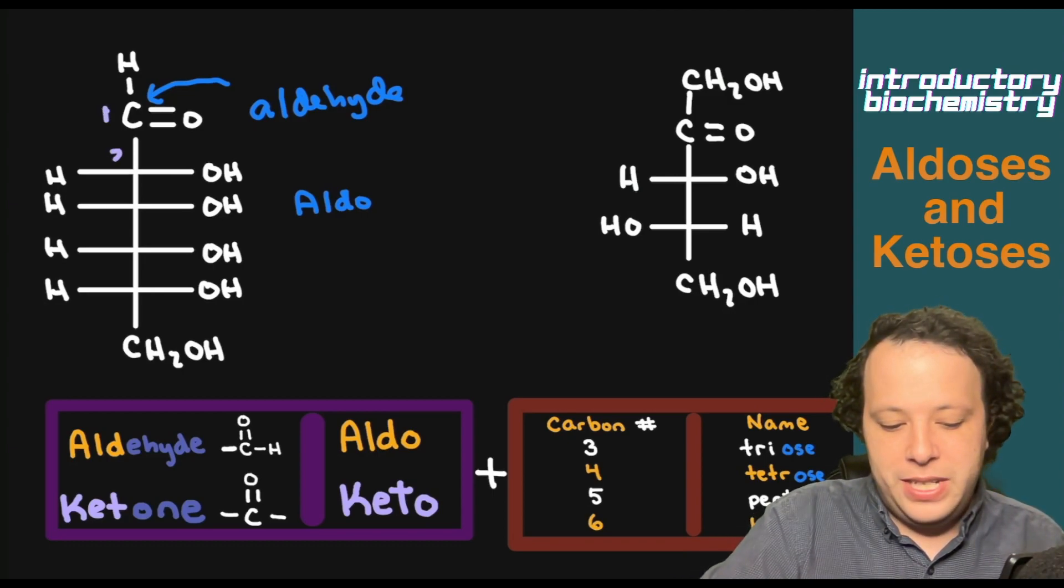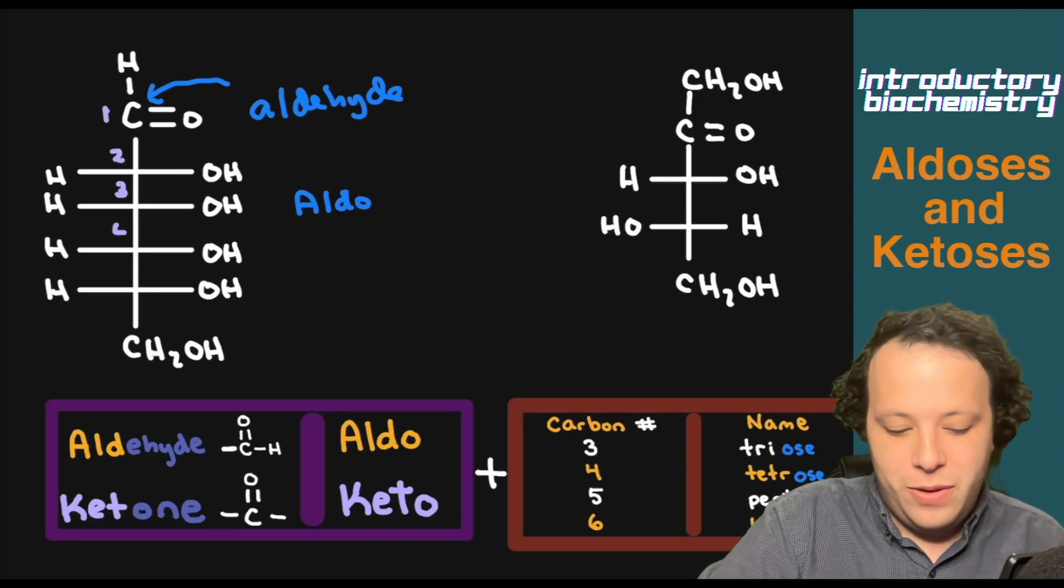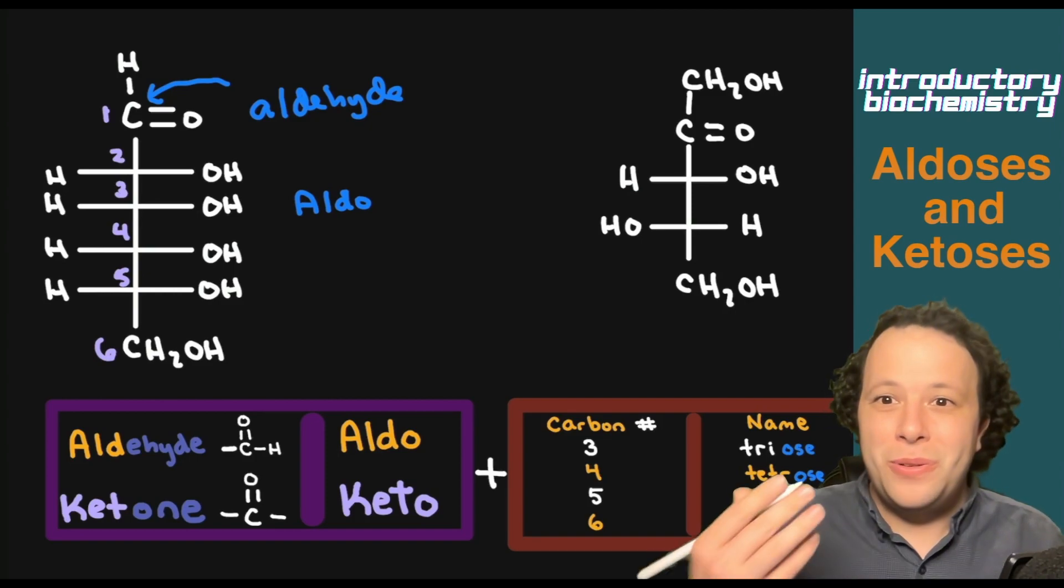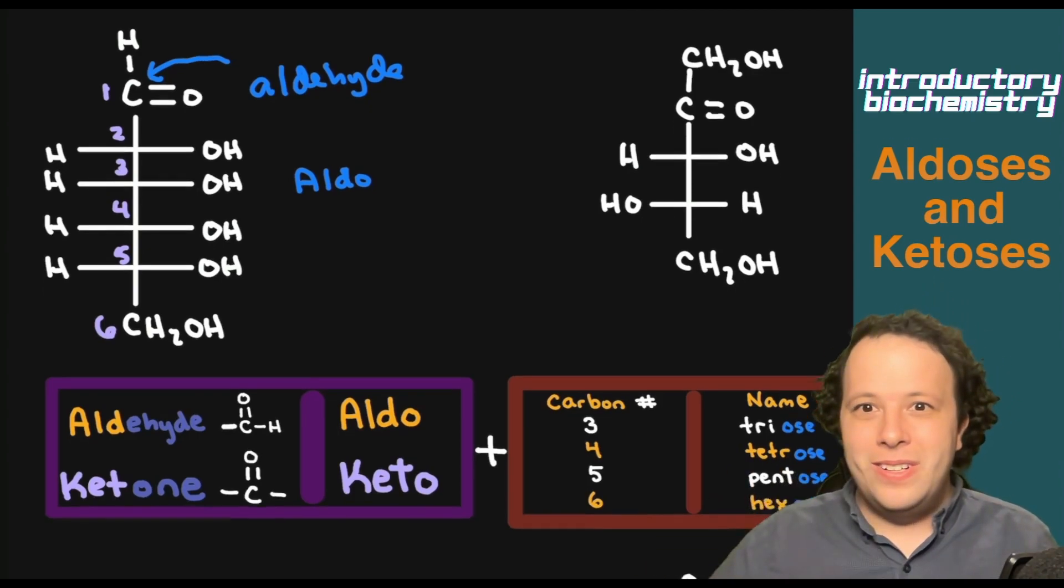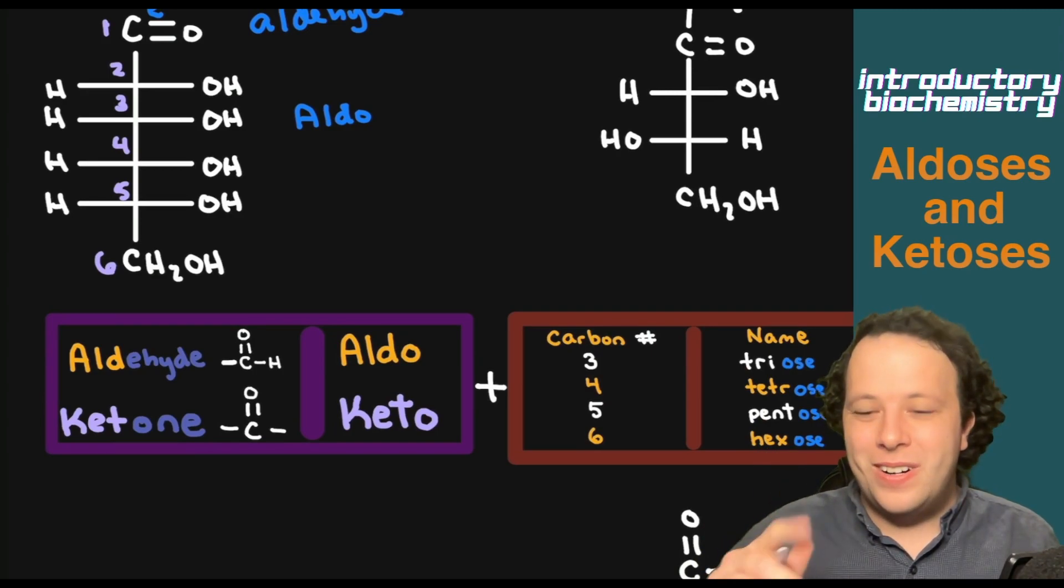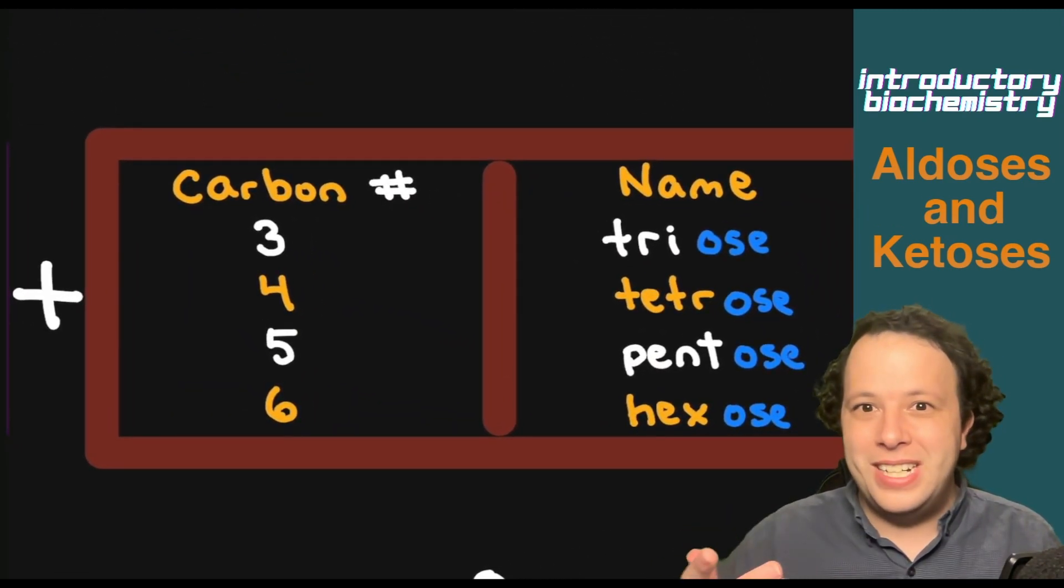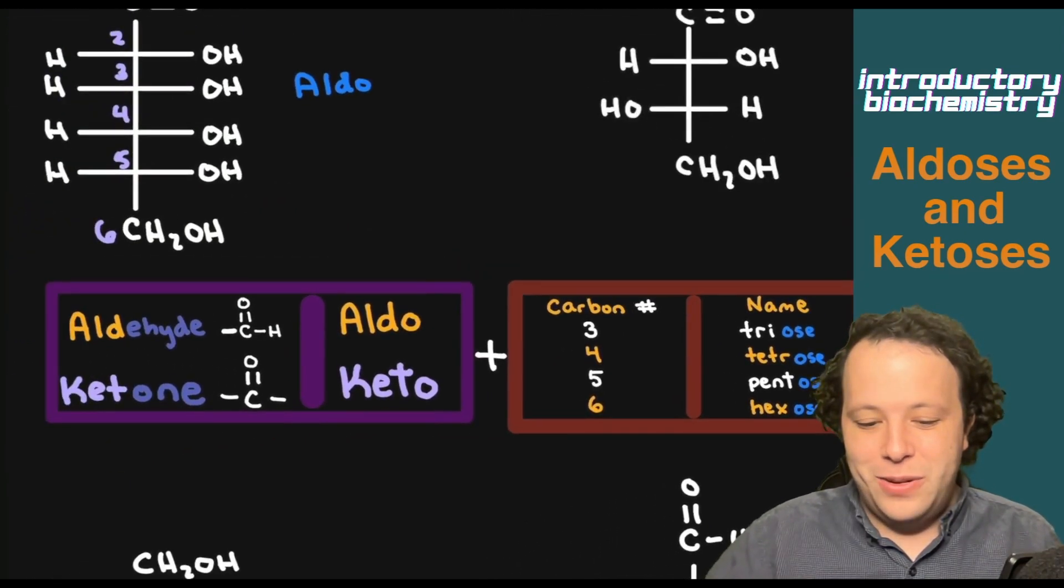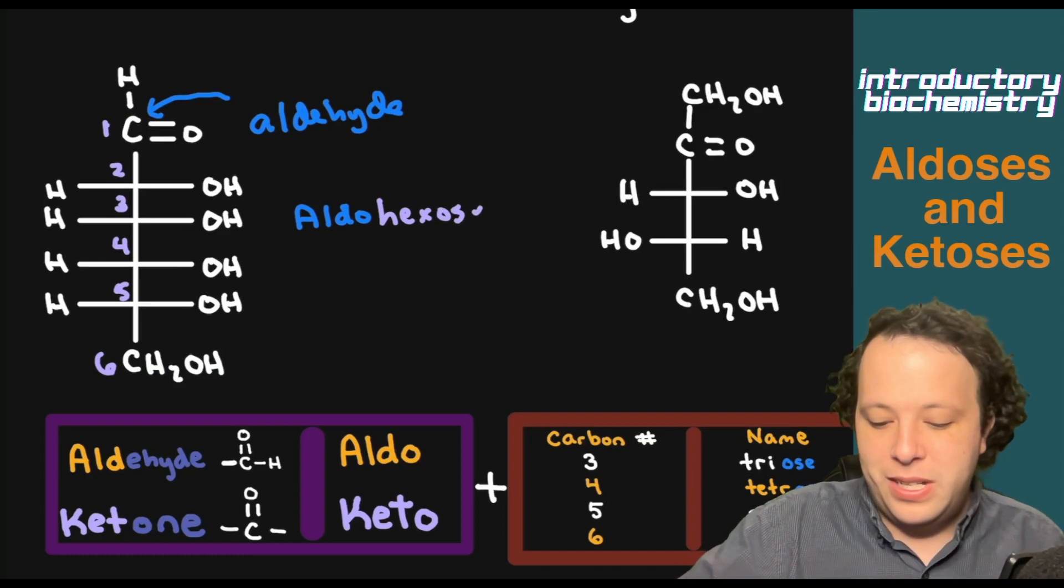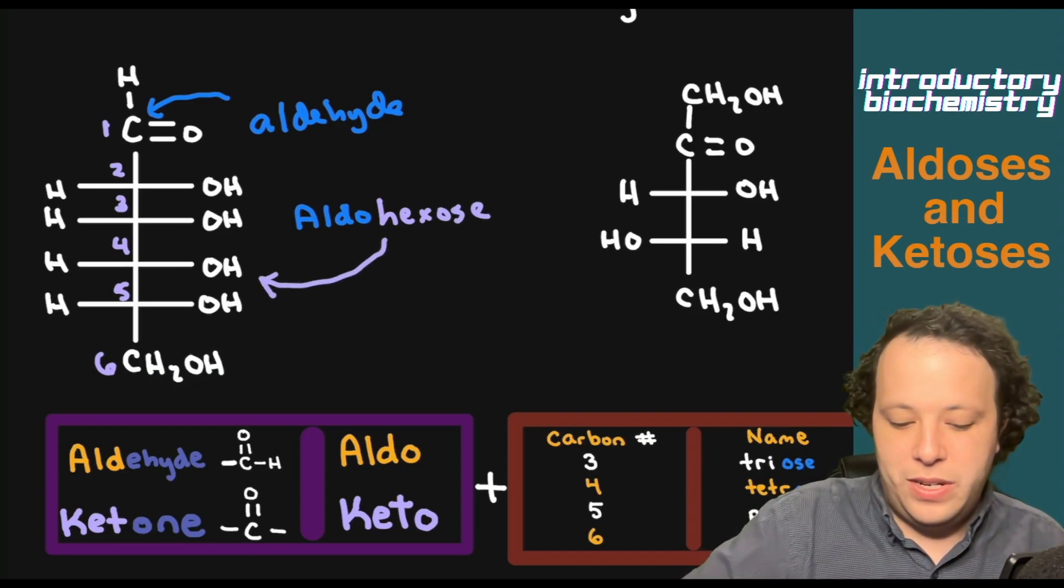So that means that this will be an aldo. Now, how many carbons do we have? Well, we're going to go down our chain, we see we have one, two, three, four, five, six carbons on our structure. So now what is that going to be? Well, in this case, it's going to be an aldohexose for our title. So we can see we have hex for six. So it's going to be aldohexose. And that will be how we would classify the structure on the left.